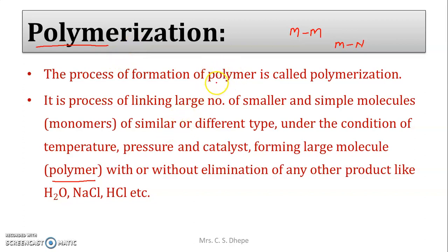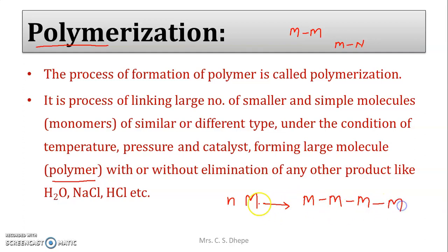Polymers are formed from monomers. A monomer is a small and simple molecule. If we take n number of monomers represented as M, when they link to each other, a long chain polymer is formed. Initially the molecular weight is less, but as they form the long chain, the molecular weight increases. When monomers undergo repeated addition under the conditions of temperature, pressure, and catalyst, it is called polymerization.